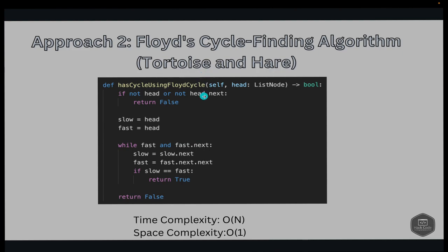Looking at the Floyd's cycle finding code: on a high level, we use two pointers slow and fast to traverse the list. The slow pointer moves one step at a time while the fast pointer moves two steps. If they meet, a cycle is detected; if fast reaches the end, there is no cycle. First, we check if head is None or head.next is None — if so, return false, as there is no cycle.